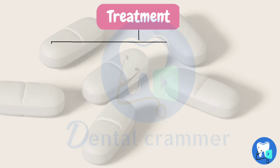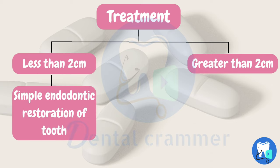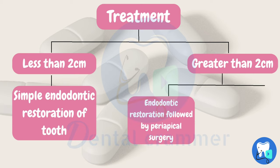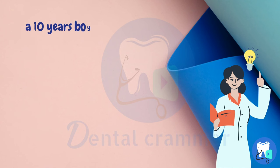The treatment of periapical cysts depends upon its size. If it is less than 2 cm, then simple endodontic restoration of the tooth is done. If the cyst is greater than 2 cm and the tooth is to be retained, then endodontic restoration followed by periapical surgery is done. Otherwise, extraction of the tooth followed by enucleation and curettage.